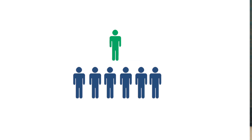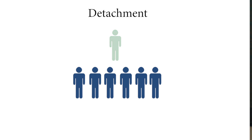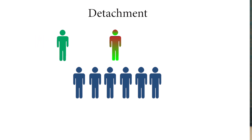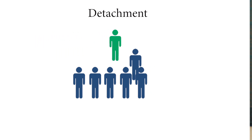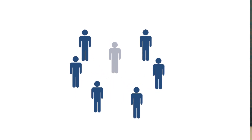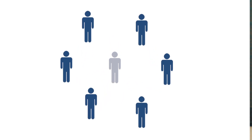The first guideline is: when you, as the leader, bring a particular topic to your team, you need to be emotionally detached from the particular strategy. You're attached to the outcome, but you need to be somewhat detached. If you can't be detached, then that's a time when you need to bring in either somebody from the outside to facilitate, or another member of the team who is more detached than you are.